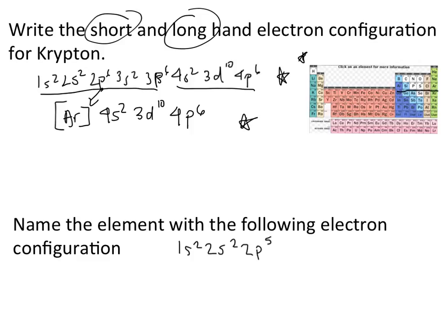Another way questions may be asked is: given an electron configuration, identify the element. For 1s² 2s² 2p⁵, follow along the periodic table — 1s² uses two, 2s² uses two more, and 2p⁵ means five electrons in the 2p block. Counting one through five across the 2p block lands on fluorine. The element is fluorine.